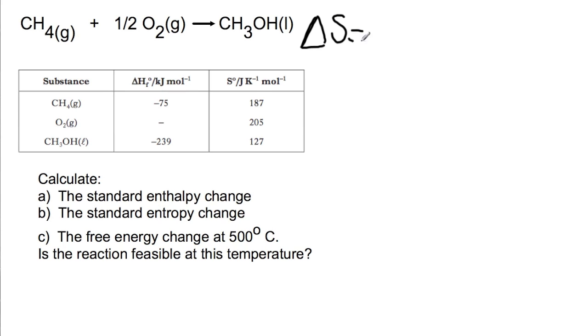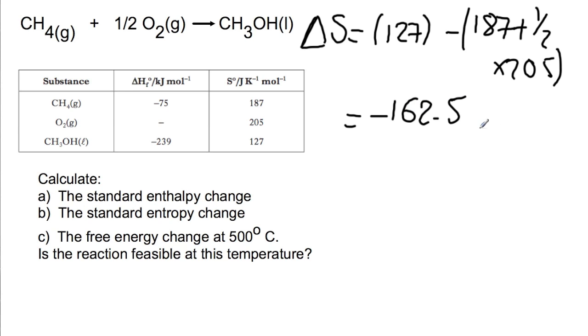So we have delta S and we take our product which is 127 minus the two reactants added together. So we have 187 plus a half times 205, a half because we have a half here in the reaction equation. So this gives us an entropy change of minus 162.5 joules per K per mole.